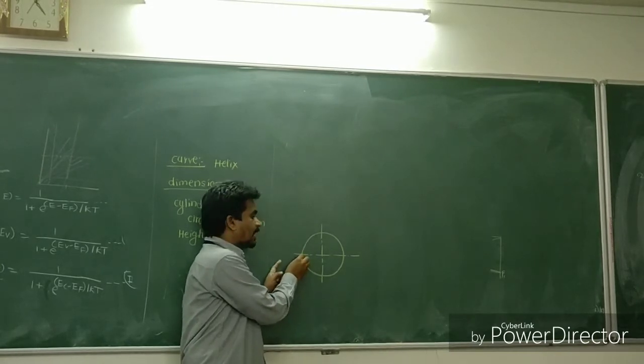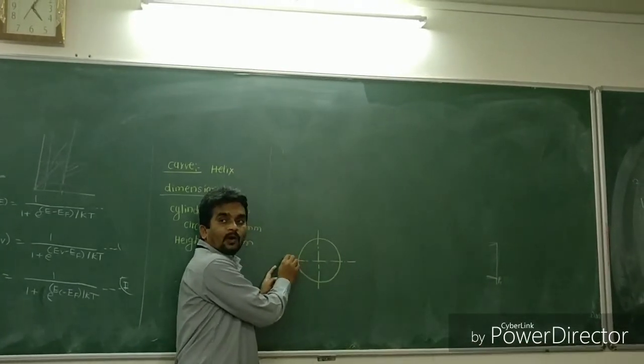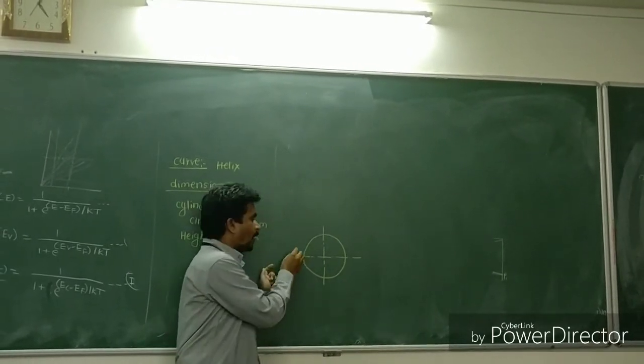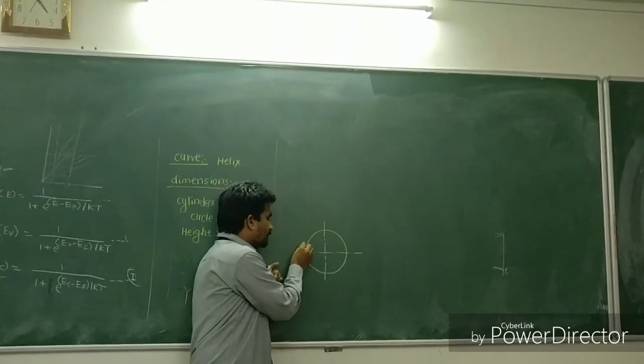See carefully, your point is starting from horizontal diameters at your left hand. So point is here, point P is here.